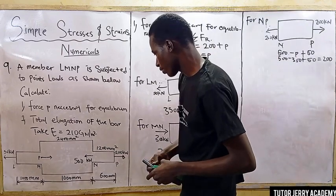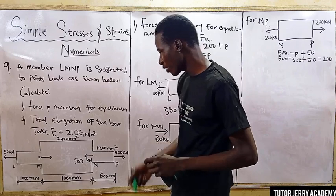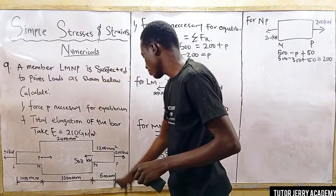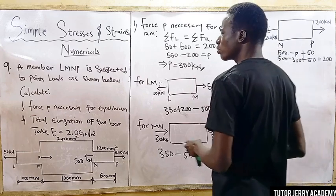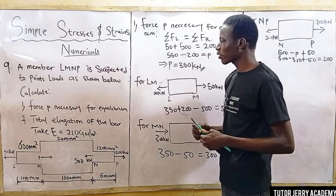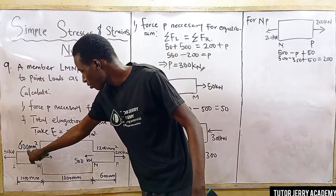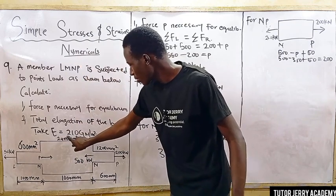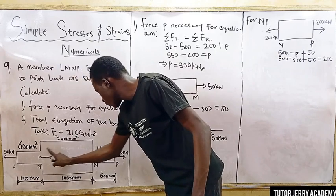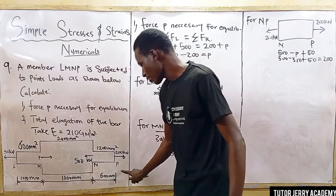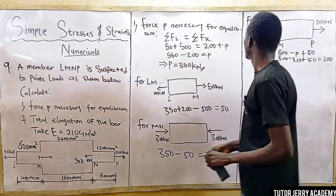We are given the areas for each section from the question: 600 millimeters squared for the first section, 2400 millimeters squared for the second section, and 1200 millimeters squared for the third section. The lengths are 600 millimeters, 1000 millimeters, and 1000 millimeters respectively.